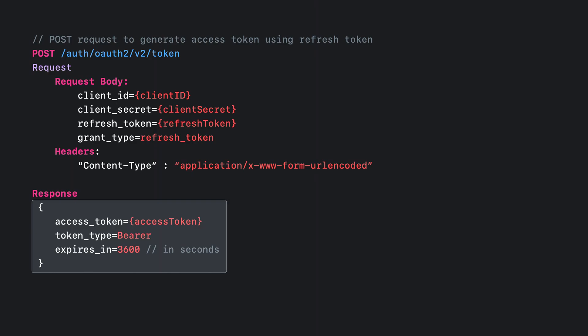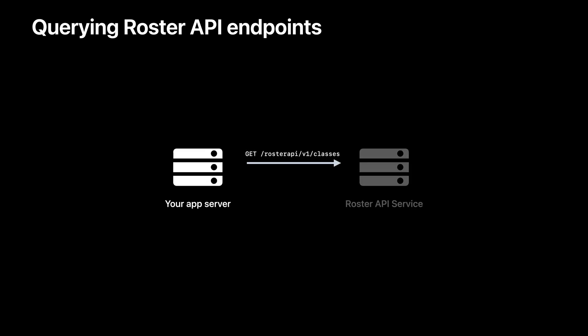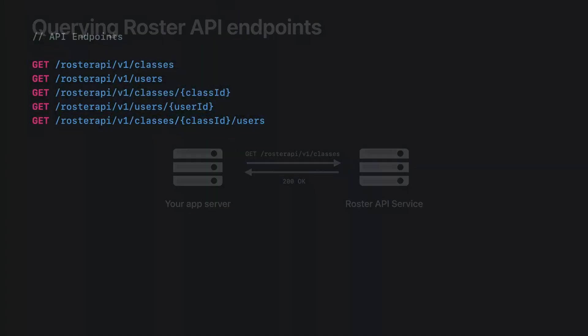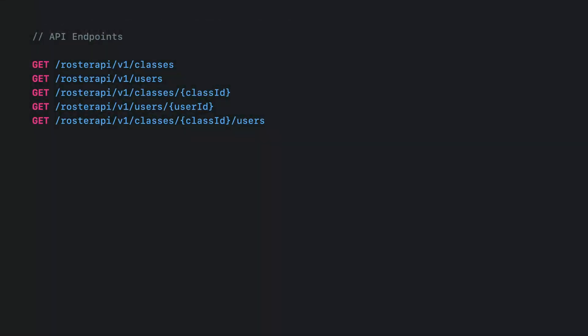After successfully completing the OAuth authorization flow, your app now has the access token, which can be used to fetch user and class information from the Roster API. As part of our current release, we're introducing five endpoints that apps can query: fetching a list of classes, a list of users, a specific class, a specific user, and users in a class. Let's walk through a simple example flow to demonstrate how you can fetch users and classes.